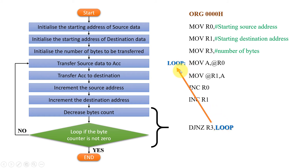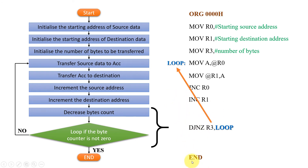When the assembler assembles the code, the label in the DJNZ instruction is written as 'LOOP' with no colon, while the label placed in the label column has a colon, indicating it is the label address. So 'LOOP:' marks the address and 'LOOP' in the instruction references it — this syntax must be remembered. When the whole loop is over, all data has been transferred to the destination and the program ends.